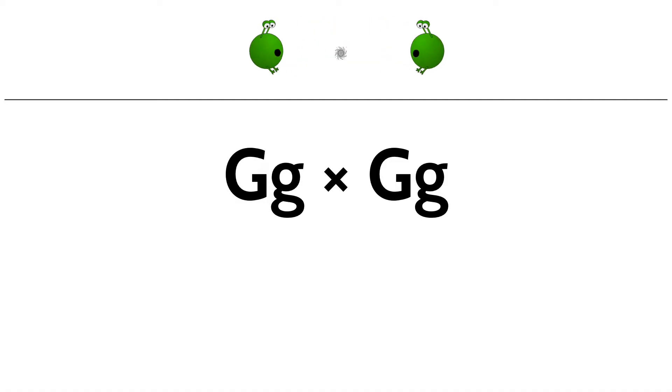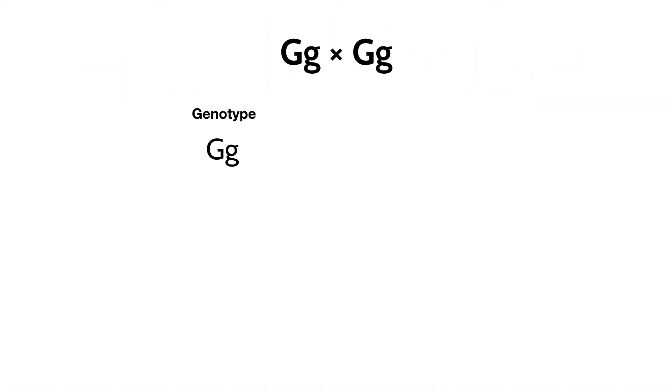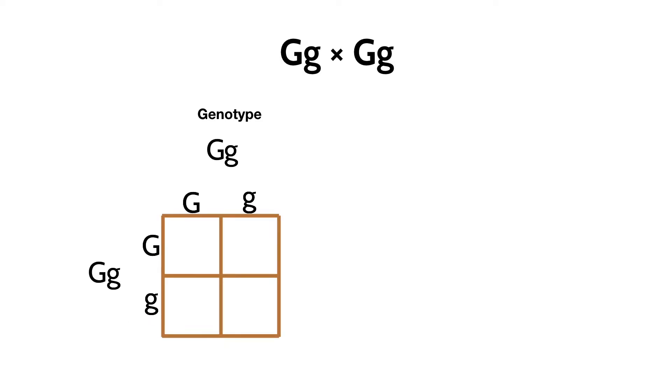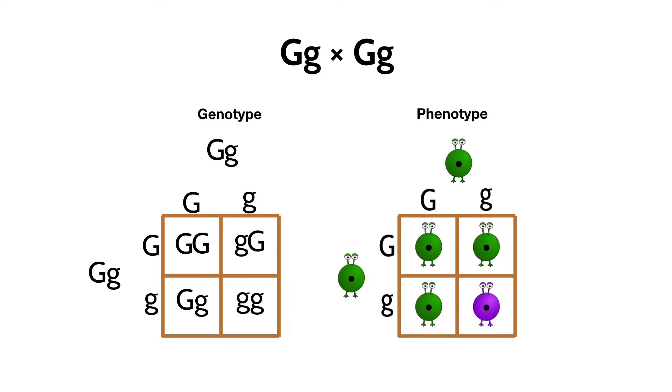In the cross of two heterozygous aliens, something interesting happens. Since there's a 50-50 chance of each parent giving their child either the green or the purple copy of the gene, we can draw out the possibilities with what's called a Punnett square. This shows us that, on average, one quarter of the offspring will be homozygous dominant, one quarter will be homozygous recessive or purple, and half will be heterozygous and appear green, just like their parents.